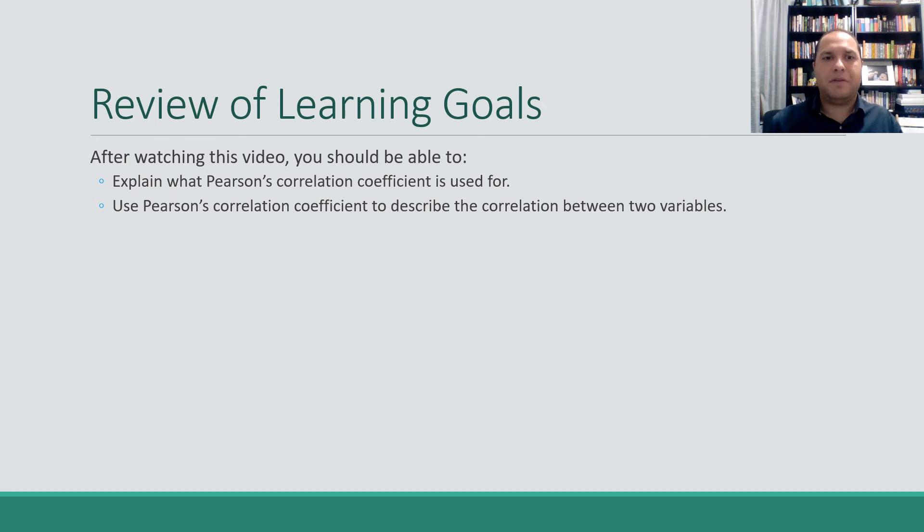All right, so after watching this video students, you should be able to explain what Pearson's correlation coefficient is used for and then use it to describe the correlation or the association between two variables.